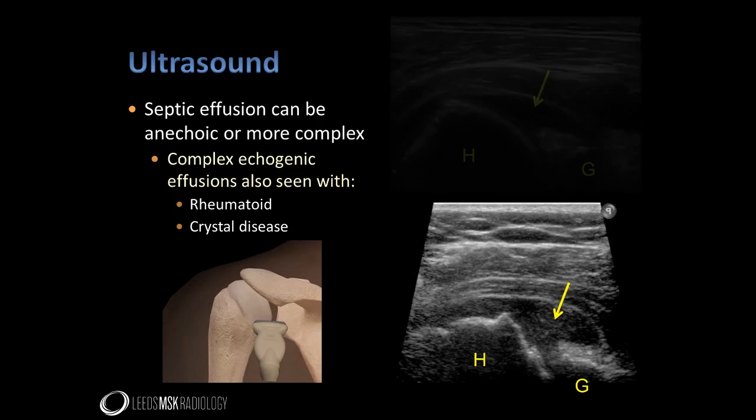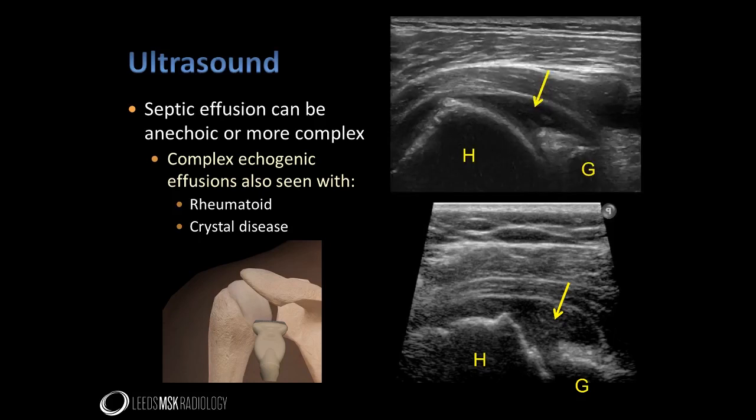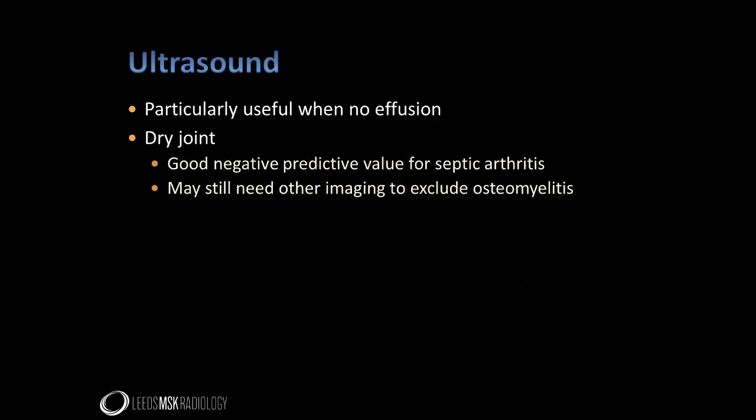However, complex effusions can be seen in non-septic joint disease. Furthermore, joint sepsis can have an anechoic appearance. Perhaps as a diagnostic tool, ultrasound is most useful when it demonstrates there is no joint effusion, as a dry joint strongly suggests there is no septic joint. However, a dry joint doesn't exclude bone sepsis.